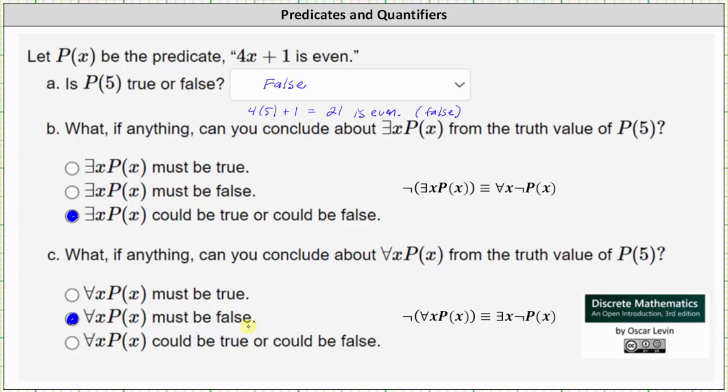A common way to show that a given quantified statement is false is to show the negation is true. The negation of for every x P of x is true is there exists an x such that P of x is false. Notice in the formula negation, we pass the negation over the quantifier, which switches the quantifier. The negation of for every x P of x is true is there exists an x such that P of x is false, which we know from part A because P of 5 is false. So because the negation is true, we know the original quantified statement is false.